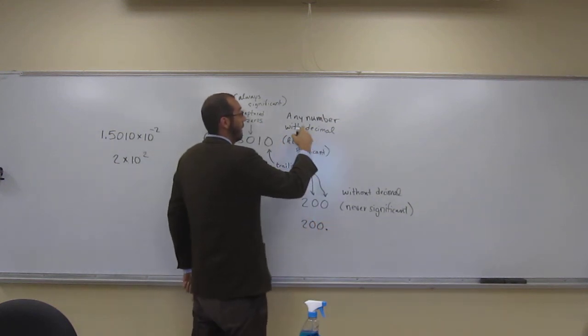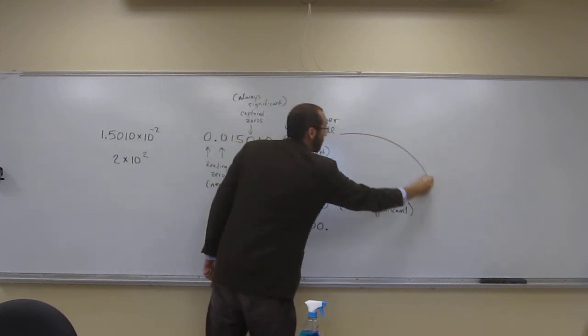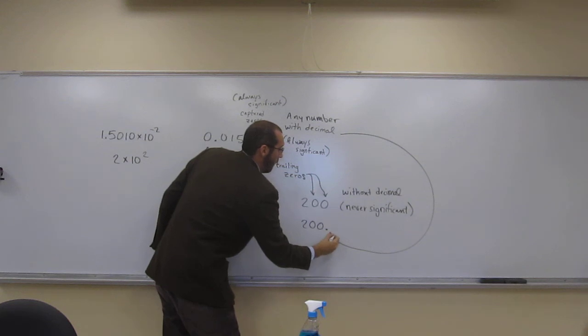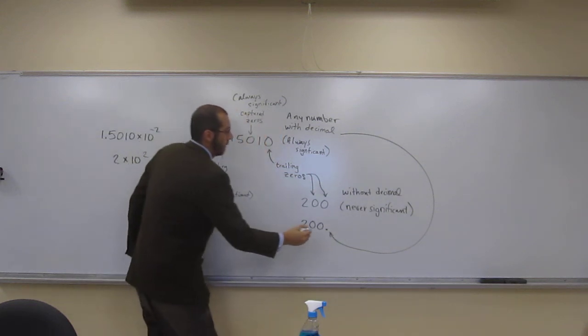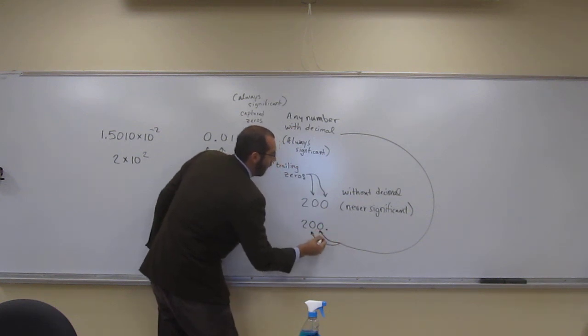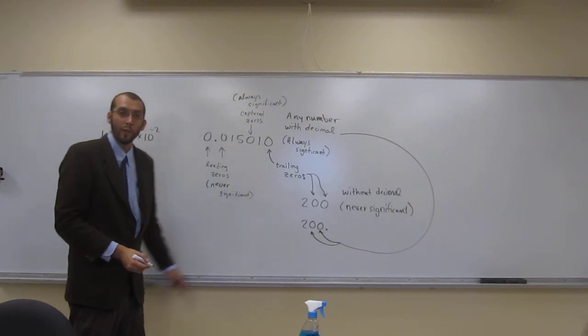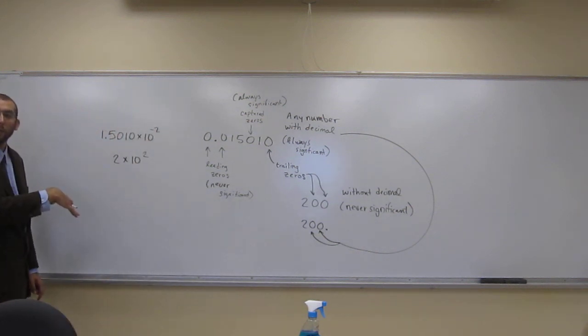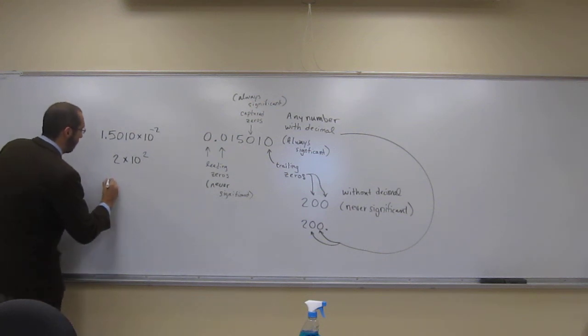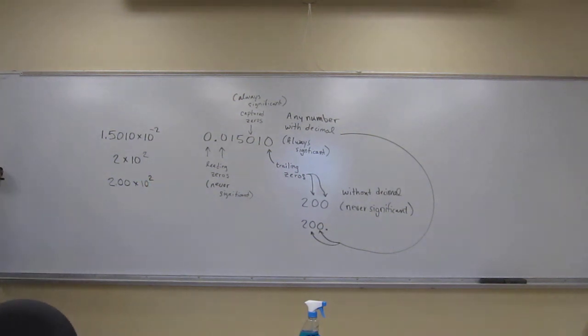So this is a number with a decimal, right? So they're always significant. So those, the zeros are there and there. So let's put this into scientific notation. So are we going to leave those zeros in there when we put it into scientific notation? We're going to keep them. Keep them.